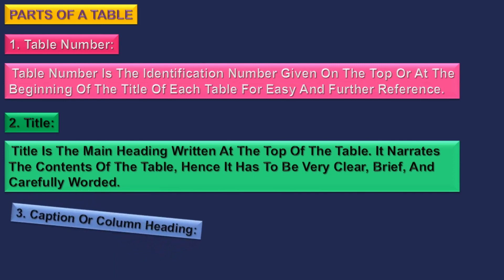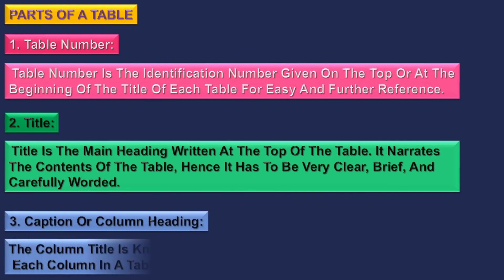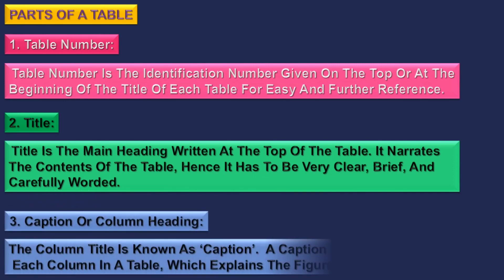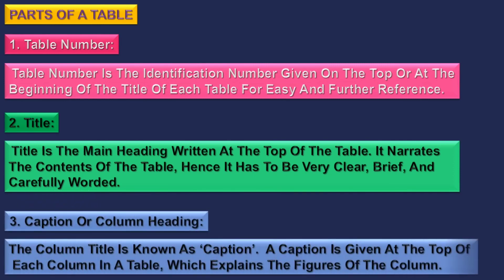3. Caption or Column Heading — the column title is known as caption. A caption is given at the top of each column in a table, which explains the figures of the column.